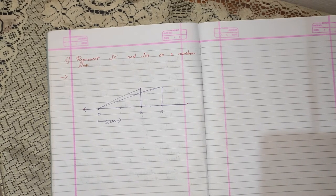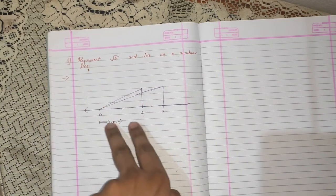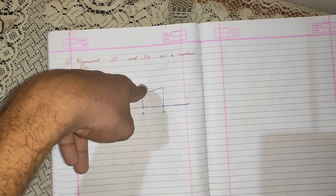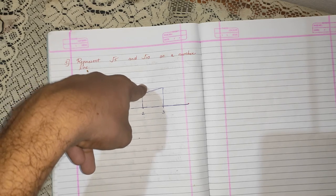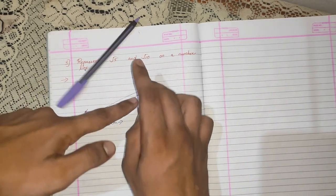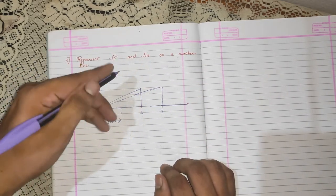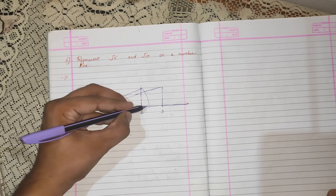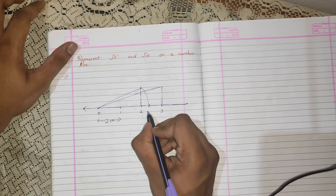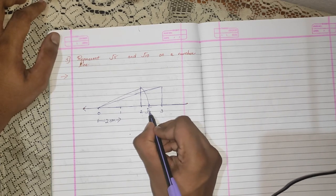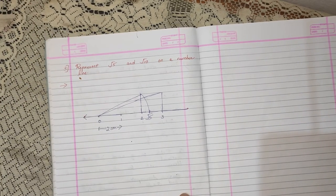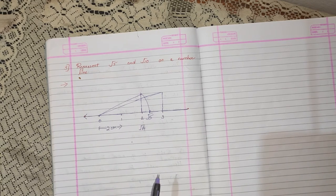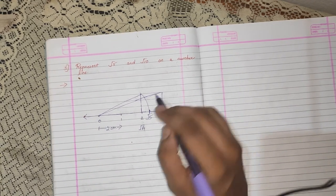Now take a rounder and measure the 2 points. From 0 to 2, keep the rounder with the pencil pointing at 2, and drag the rounder down. What I have to do is: if my pencil is here, the rounder comes down and marks one point. This point that is marked is the value of root 5 — because root 4 is represented at 2, hence the value that comes after root 4 is root 5. The new point I got is root 5.